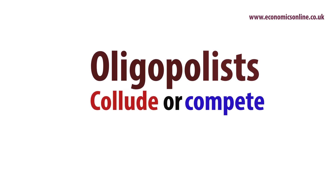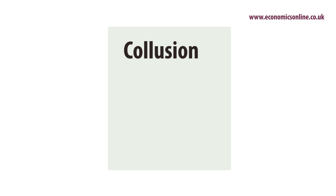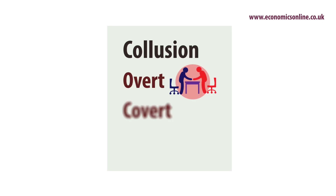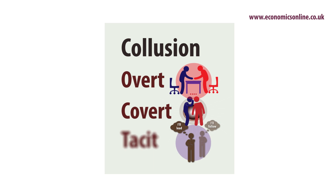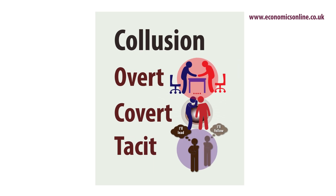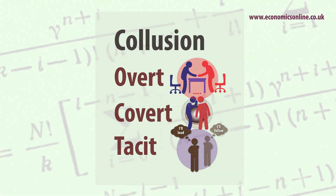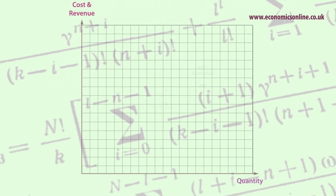Collusion means acting together for the mutual benefit of all firms. Collusion may be open, referred to as overt, or may be covert, meaning agreements are reached in secret. Finally, coordination may be based on shared rules and understandings, referred to as either tacit collusion or concerted practice.